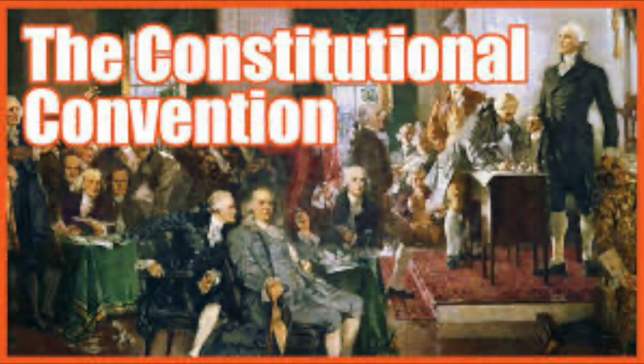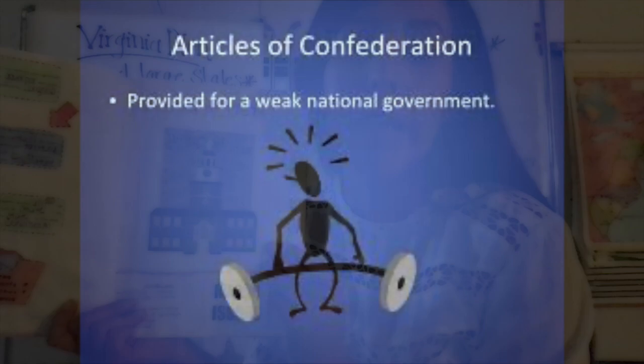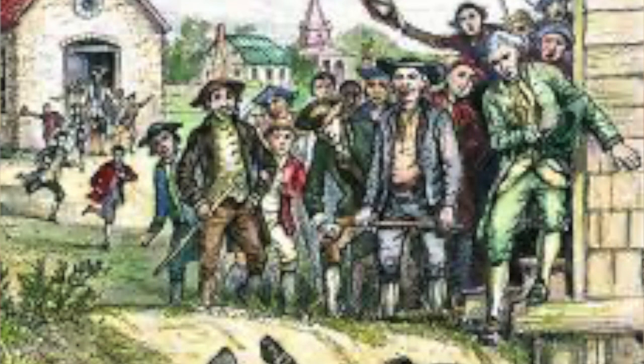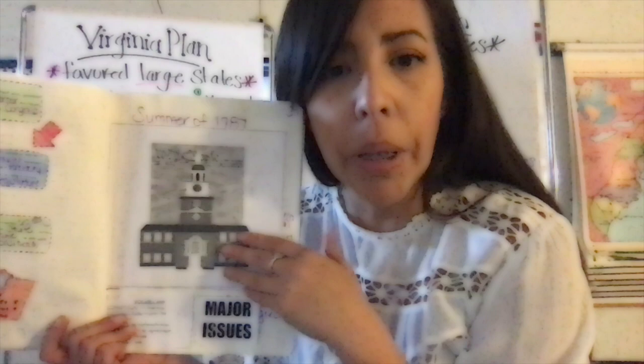What are we doing here? We are trying to revise the Articles of Confederation. What do we know about the Articles of Confederation? That they weren't working out. Why? Because it created a weak national government and a strong state government. Shays' Rebellion really proved that the Articles of Confederation wasn't working out. So what do we end up doing? We end up calling a meeting, and that meeting is going to be called the Constitutional Convention.